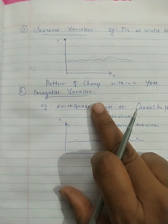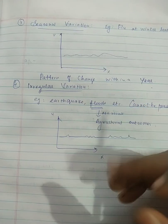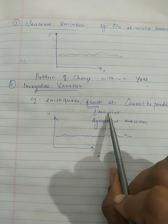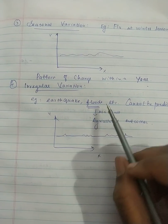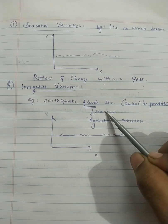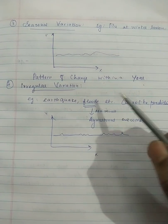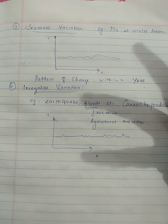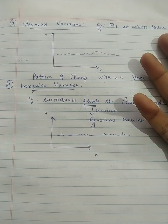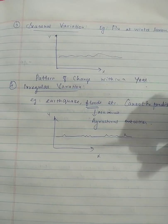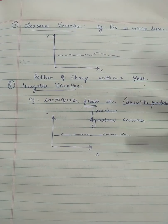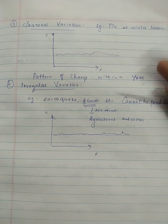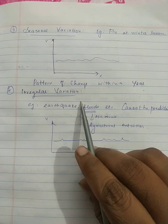The next one is irregular variation. Irregular variation is something we cannot predict, like an earthquake or a flood. Recently, we were worried about how agriculture is affected. When there is a lot of damage, we know crops will be lost. There are a lot of agriculture losses at that time. This is the best example for irregular variation.